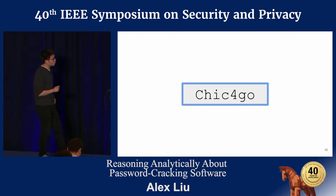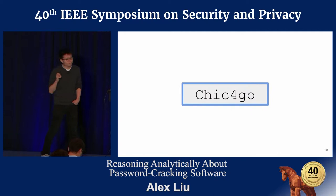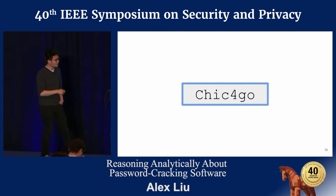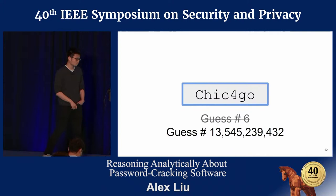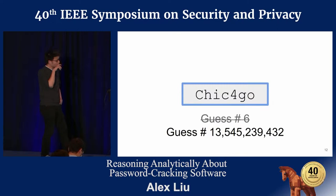Ultimately, what we care about is: I have a password — will it be cracked or not? But this is a complicated question. It depends on all the assumptions you're making, from the attacker's motivation to the hardware they have access to. A common abstraction is to model a plausible attack and count how many other things are guessed before guessing this password of interest — turning the password into a guess number. In this toy example, the guess number is six, but in a real attack it might be something like 13 billion. If this guess number is large, the password is probably strong; if small, it's likely weak.